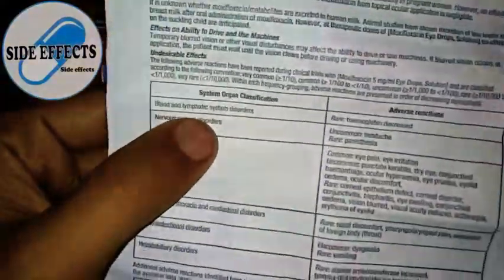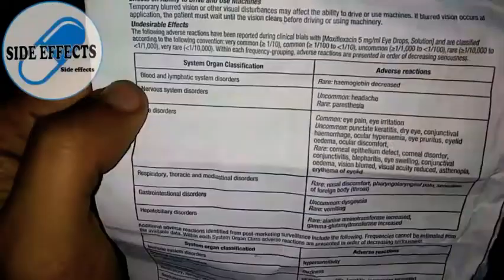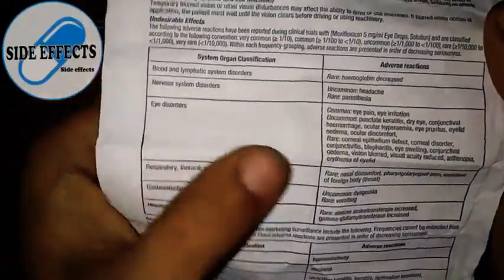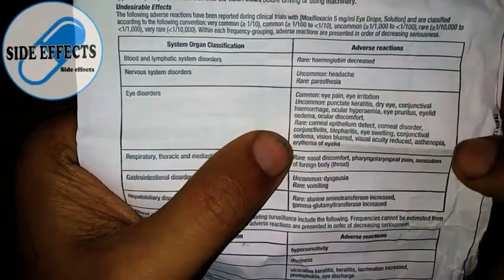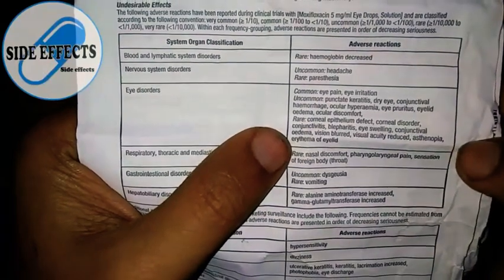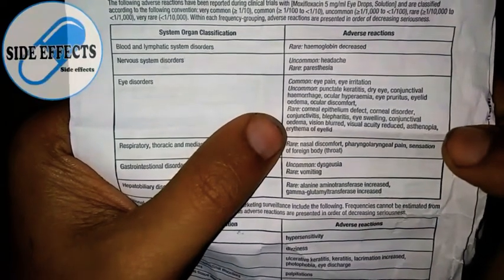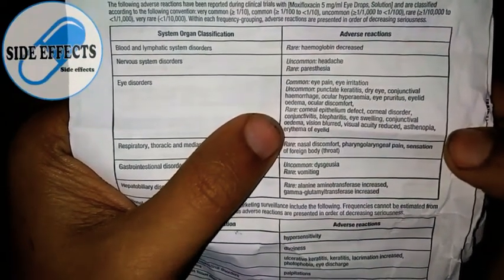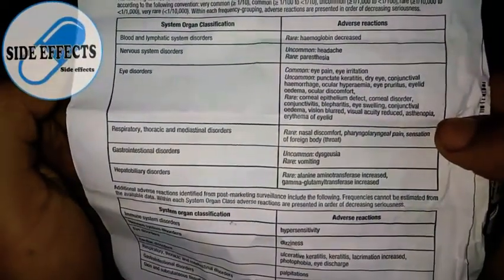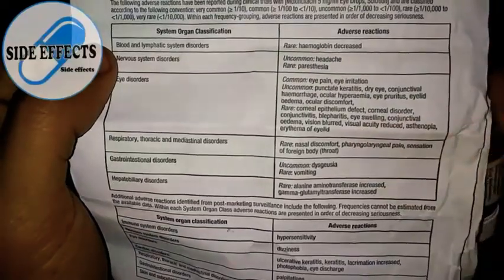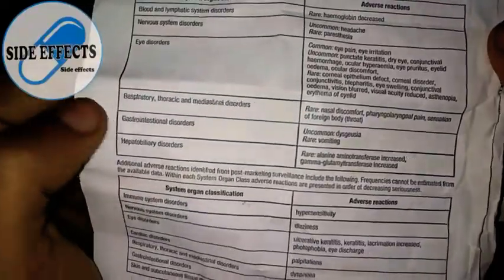It has side effects on our blood and lymphatic system — it can decrease hemoglobin. It can also cause eye disorders like eye pain, eye irritation, punctate keratitis, dry eye, conjunctival hemorrhage, ocular hyperemia, eye pruritus, eyelid edema, and ocular discomfort. In rare cases it can also cause corneal epithelium defect, corneal disorder, conjunctivitis, blepharitis, eye swelling, conjunctival edema, blurred vision, reduced visual acuity, asthenopia, and erythema of the eyelid.